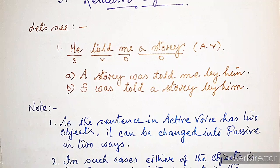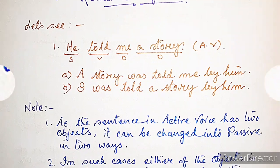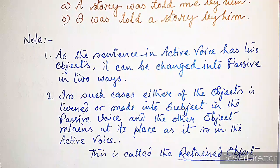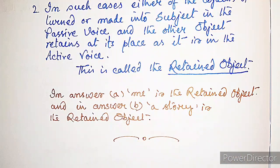A retained object appears when an active sentence has two objects. For example, 'He told me a story' can be changed into passive in two ways: 'A story was told me by him' or 'I was told a story by him.' When either object becomes the subject in passive voice, the other retains its place — this retained object is called a retained object. In answer A, 'me' is retained; in answer B, 'the story' is retained.